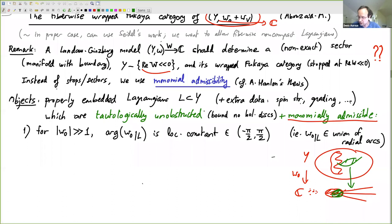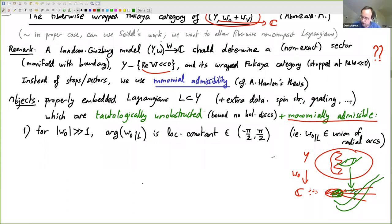If the projection is holomorphic, which it is, holomorphic disks have to be contained inside the fibers. If I have several Lagrangians over arcs and paths going in different directions at infinity, I can keep my Floer trajectories inside well-defined polygonal regions of the base.